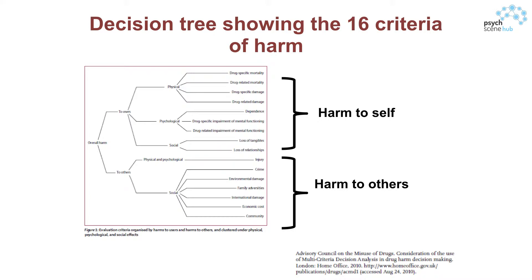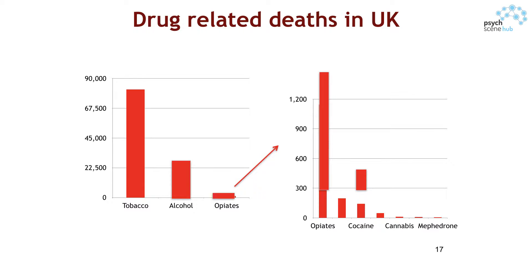Some of these parameters are pretty straightforward — we have good data on them. For instance, we have parameters on deaths. Tobacco is way the largest killer, with alcohol second, opiates third, and drugs like cannabis, ecstasy, and mushrooms very, very low in terms of the likelihood of causing death.